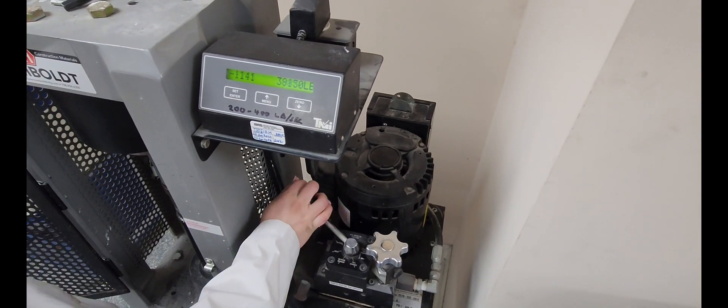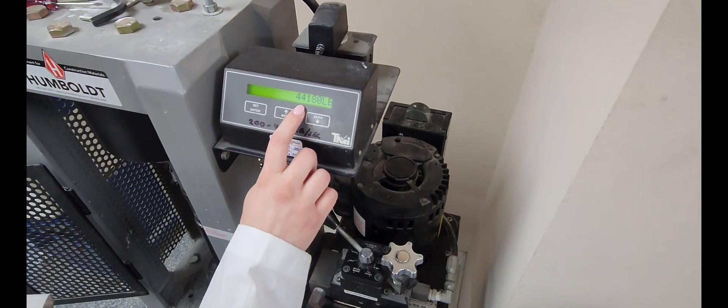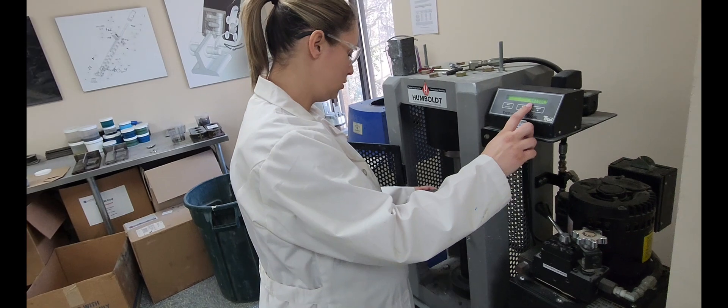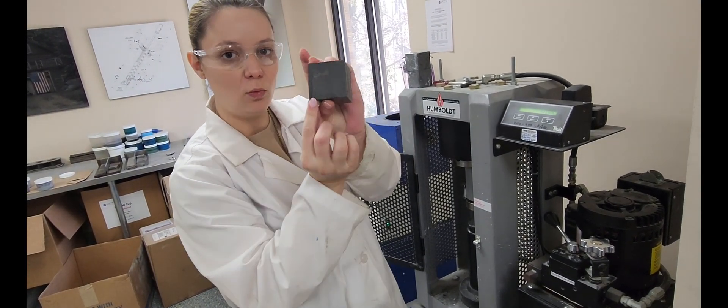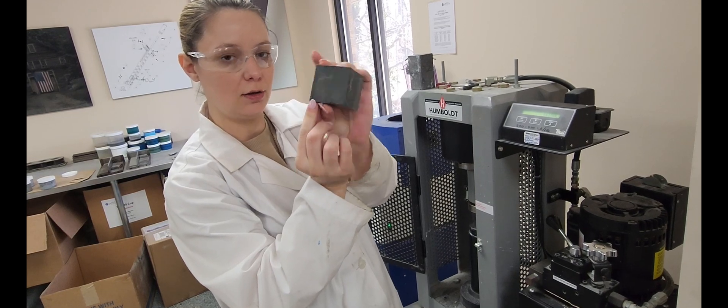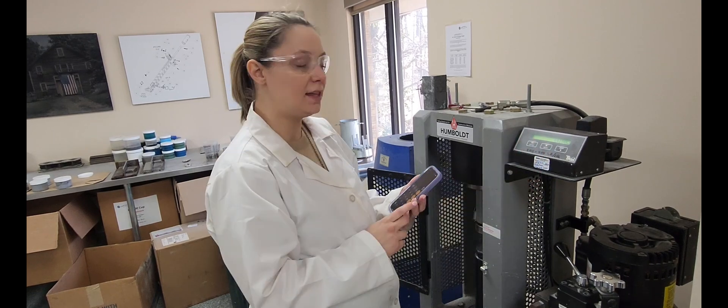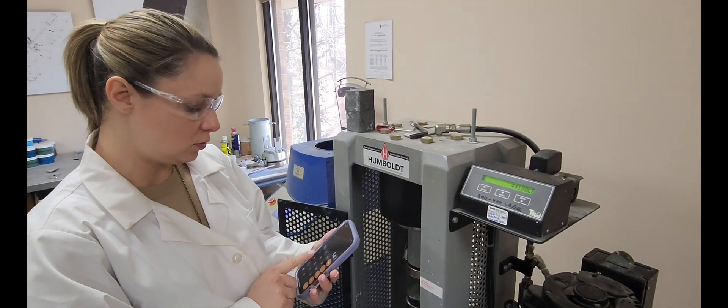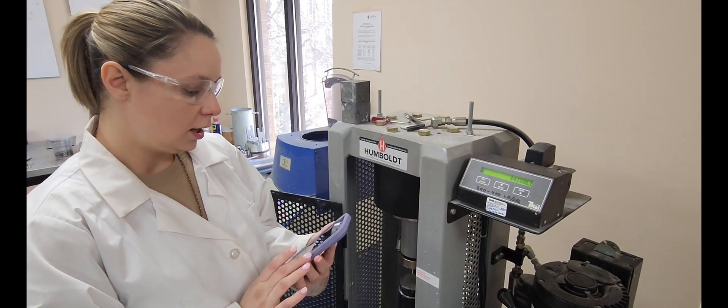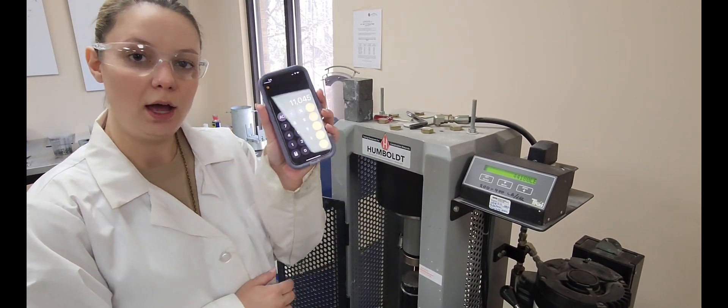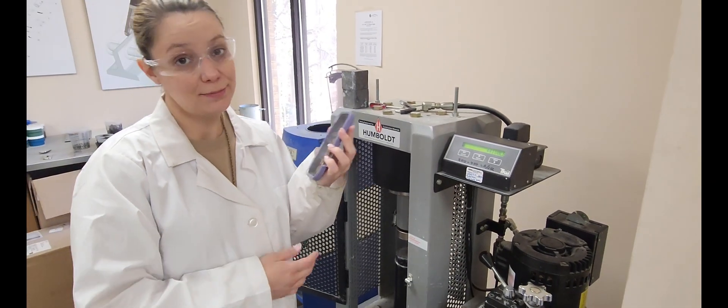Looks like we've broken our cube. Our total was 44,180. You can see where we've broken our cube. So like I said, we're going to take this number, which is 44,180, and we're going to divide it by 4. We have a strength of 11,045 PSI, which is higher than 10,000. That's great at 28 days.